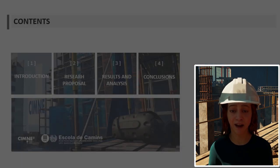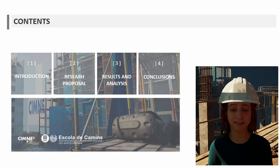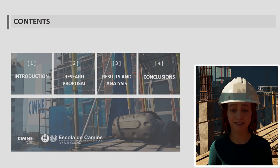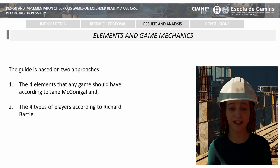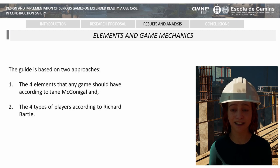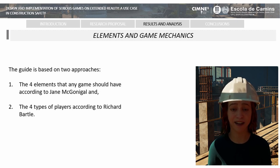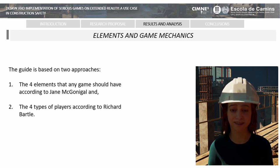The guide is based on two approaches: the four elements that any game should have according to Jane McGonigal, and the four types of players according to Richard Bartle.